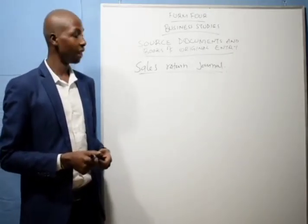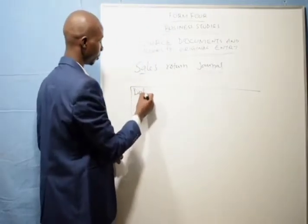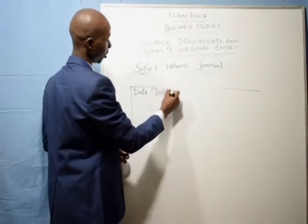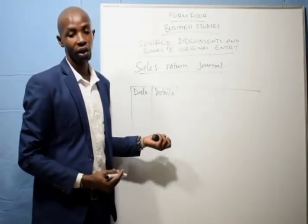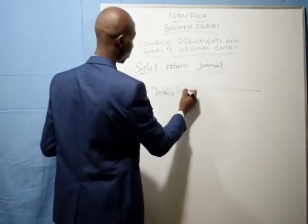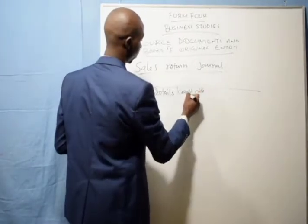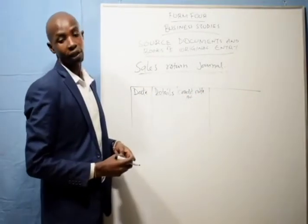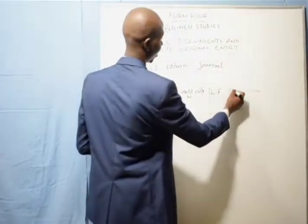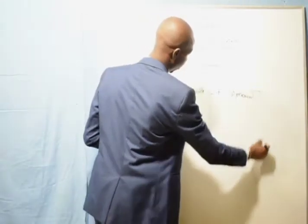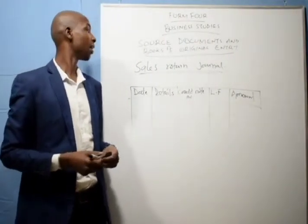We are going to see the format of the sales return journal. It has five columns: we have date, details — which can also be called particulars — then we have the credit note number, the fourth column is ledger folio, and the last column is amount. I will show you an example on some other cards.